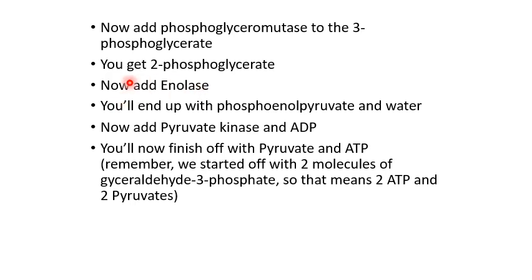We add the enzyme enolase, and we end up with phosphoenolpyruvate (PEP) and water. Phosphoenolpyruvate is often abbreviated as PEP in textbooks. Remember this molecule because it's quite important in the gluconeogenesis pathway of amino acids — we'll revisit it later in this presentation.